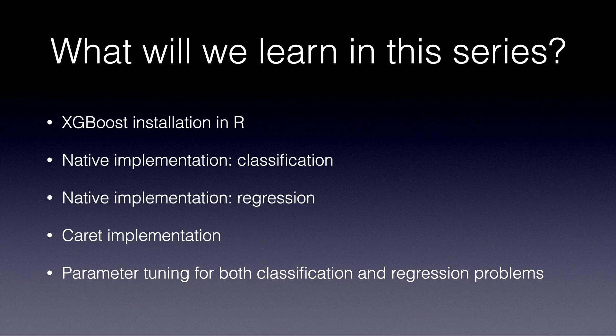We will also look at the implementation in the caret package, which adds some nice bonus features to XGBoost and also includes a lot of other algorithms. With caret, for example, it's much easier to do parameter tuning because it has some really good automated features for that. And apropos parameter tuning, that will probably be for the last video of the series, where we will look at how to get the most out of your XGBoost algorithm — how to get the model to learn more quickly or more slowly, how to increase or reduce complexity, how to avoid overfitting, and all these kinds of questions.